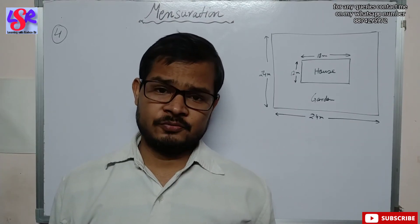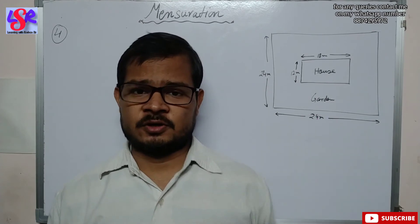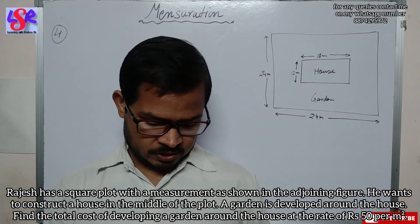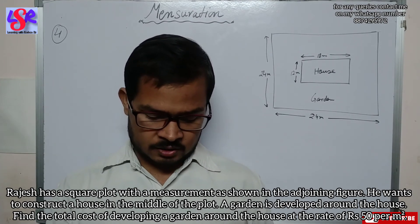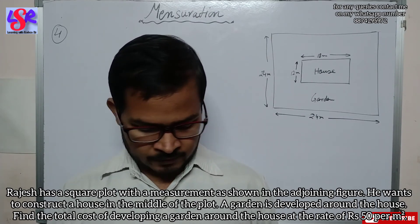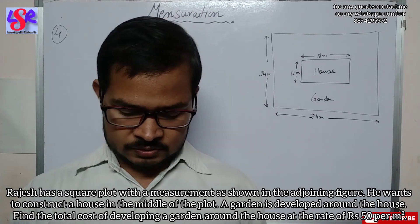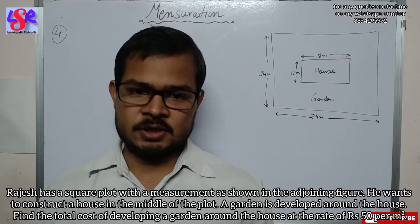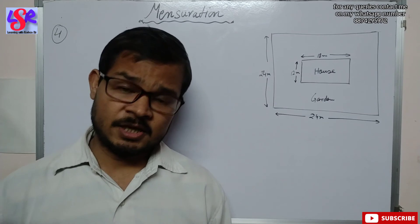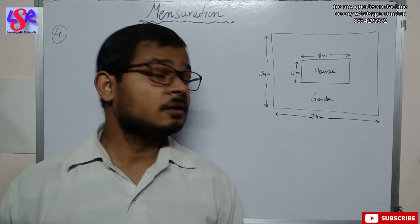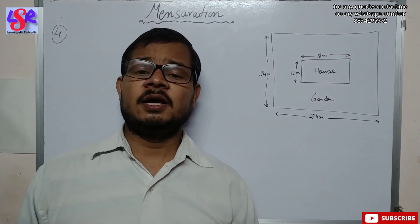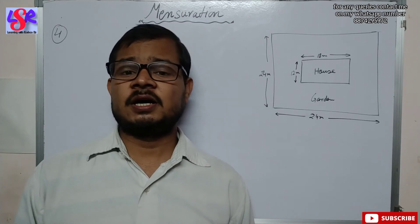Question 4: Rajesh has a square plot with measurements as shown in the figure. He wants to construct a house in the middle of the plot. A garden is developed around the house. Find the cost of developing the garden at the rate of rupees 50 per square meter. We will find the area of the whole plot, subtract the area of the house, and get the area of the garden region.